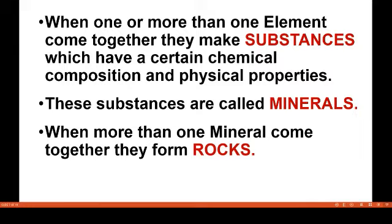When one or more elements come together, they make what is called a substance. These substances have certain chemical composition and physical properties, and they are called minerals. It means minerals are made up of elements. Similarly, when more than one mineral comes together, they form what is called a rock. So, minerals are composed of elements and rocks are composed of minerals.